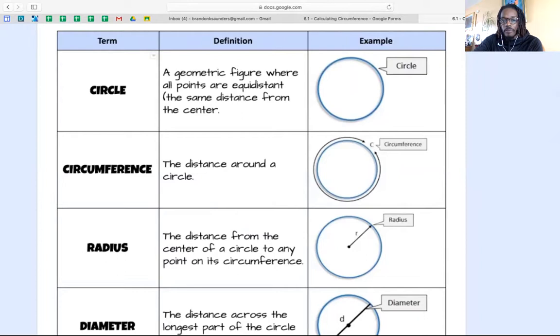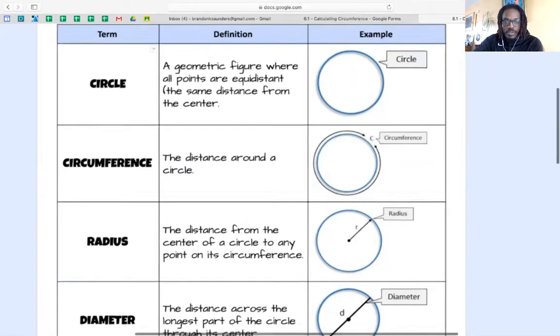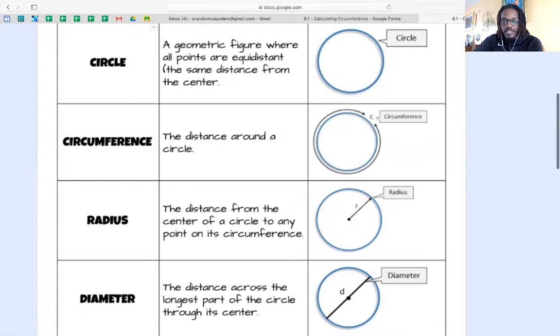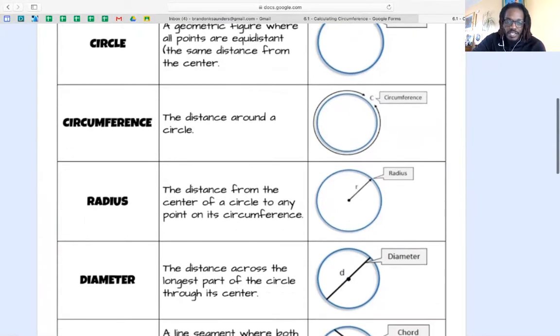So every point on this ring of the circle is the same distance from the middle of the circle. We know that circumference is the distance around the circle or the distance around the edge. Also this ring is also known as the circumference because every point on here is on the circumference. Radius is the distance from the center of the circle to any point on the circumference, or the distance from the middle of the circle to the edge.